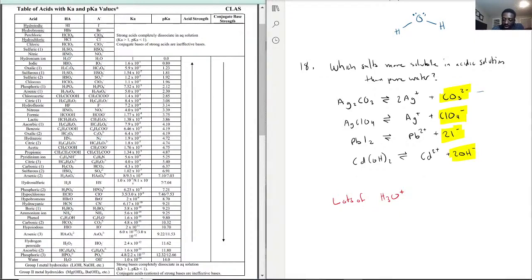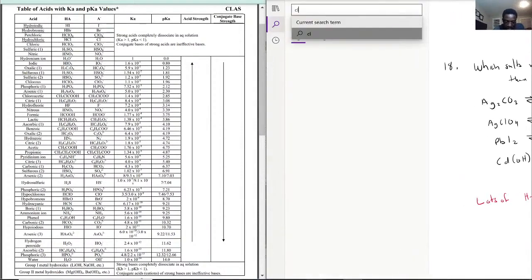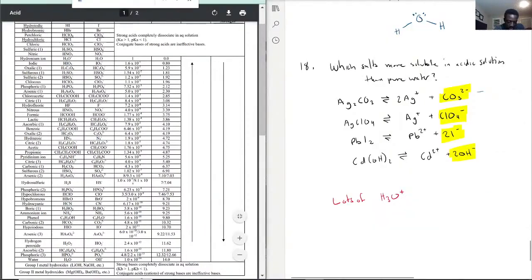Now ClO₄⁻, let's see where that is for this conjugate base. There's so much on this list. There we go, ClO₄⁻, it's all the way up here. Because perchloric acid is so much higher up, this is going to be more soluble and this is going to be less soluble.